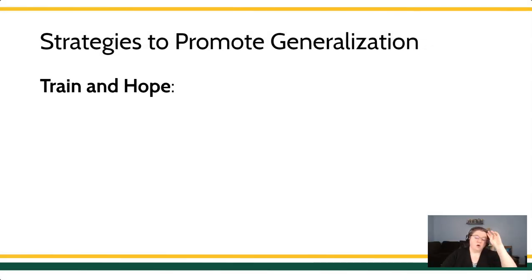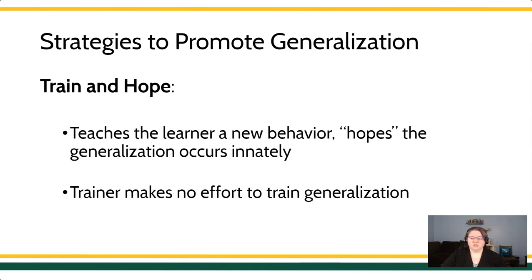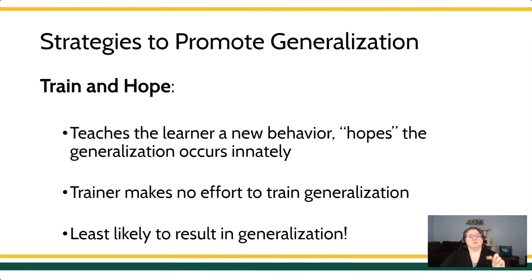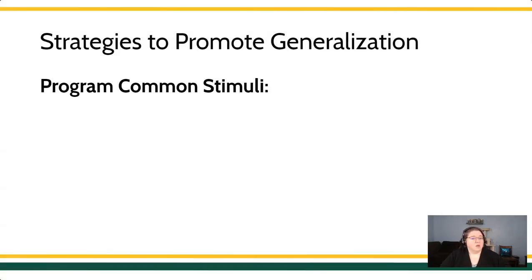Let's begin with train and hope. Train and hope is probably the worst method to promote generalization because, essentially, when we say we're training and hoping, what we're saying is: I'm going to teach the behavior and I'm just going to cross my fingers and hope that generalization occurs innately. Train and hope is kind of a non-procedure — you're not really doing anything, making no effort whatsoever to train generalization. This is least likely to result in generalization to a new setting. If you are a clinical behavior analyst, it is your job to be planning for how to help your client generalize their behavior to a new environment. You want to be thinking about what you're going to do to get really good behavior into new places with new people — into new vistas of reinforcement.